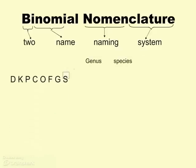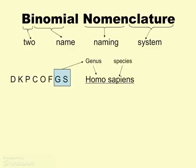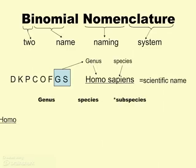In Linnaean classification, which is what is universally used, the two names that go into the two-named naming system are the genus and species. In the case of good old humans, our scientific name is Homo sapiens — that's our genus and species.